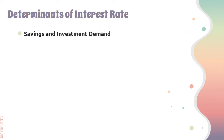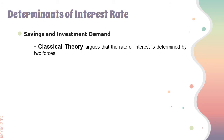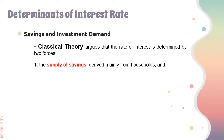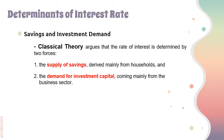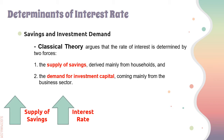Next, we have savings and investment demand, supported by the classical theory. This theory argues that the rate of interest is determined by two forces: the supply of savings, derived mainly from households, and the demand for investment capital, coming mainly from the business sector. Savings are simply an abstinence from consumption spending — savings equal income minus consumption expenditures. The higher the interest rate on deposits and other investment alternatives, the higher the tendency to save and invest, because households know they will earn more in terms of interest.